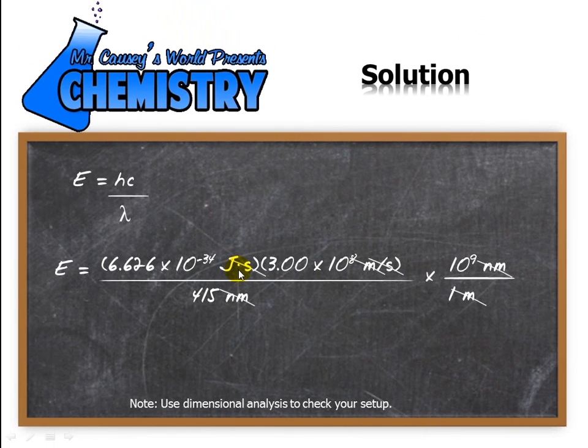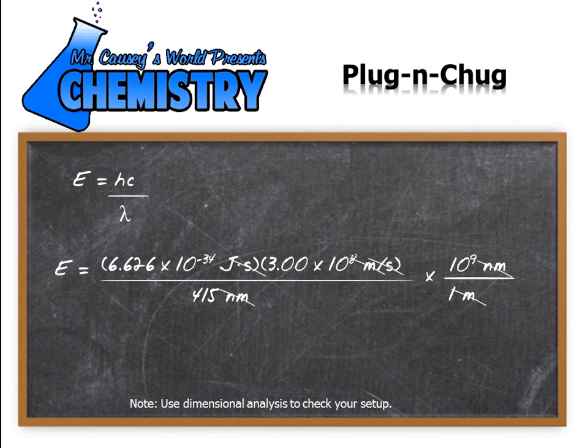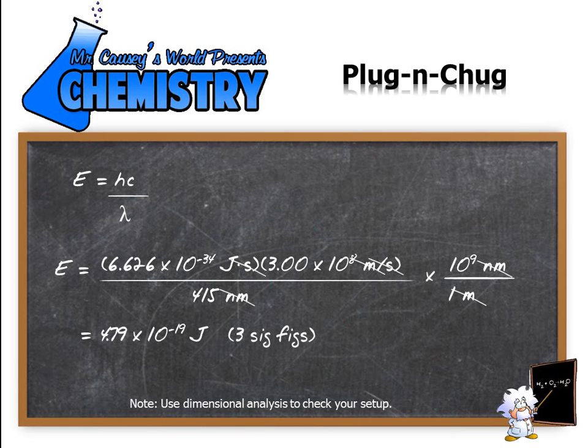Time to plug and chug. Get out your calculator. Put in 6.626 times 10 to the negative 34 times 3.00 times 10 to the 8 meters per second divided by 415, with the conversion to meters. I use a TI-84. If you use a different calculator, you might have to enter it differently. And you should have gotten 4.79 times 10 to the negative 19 joules with 3 sig figs.